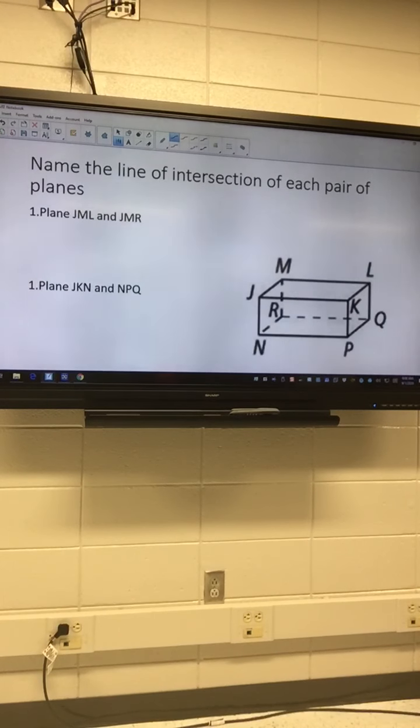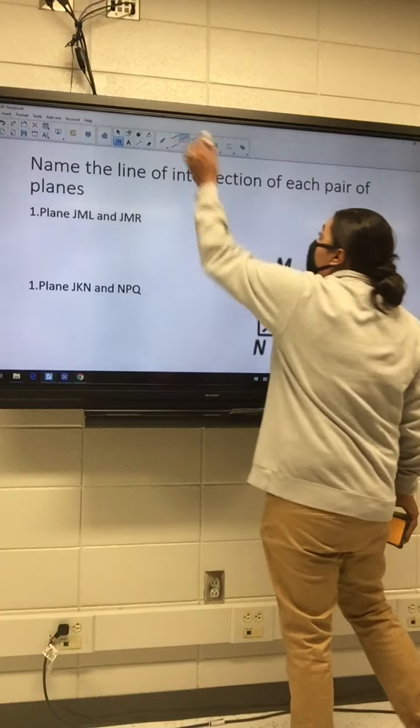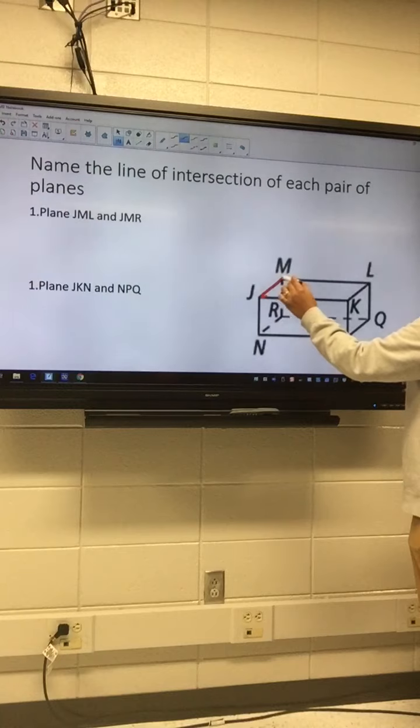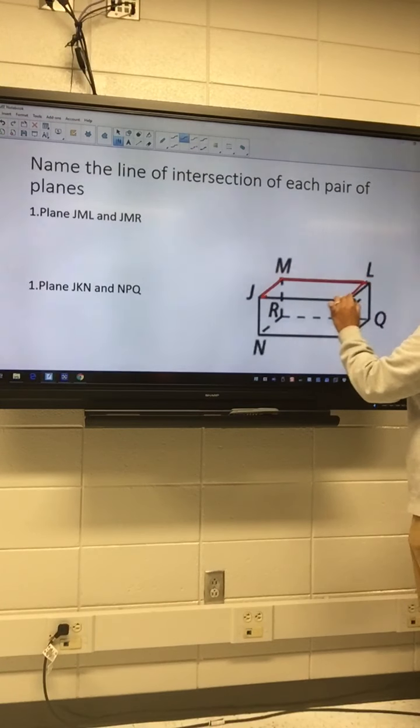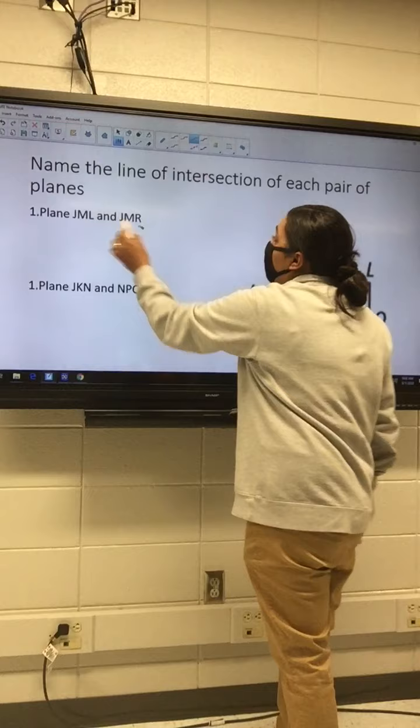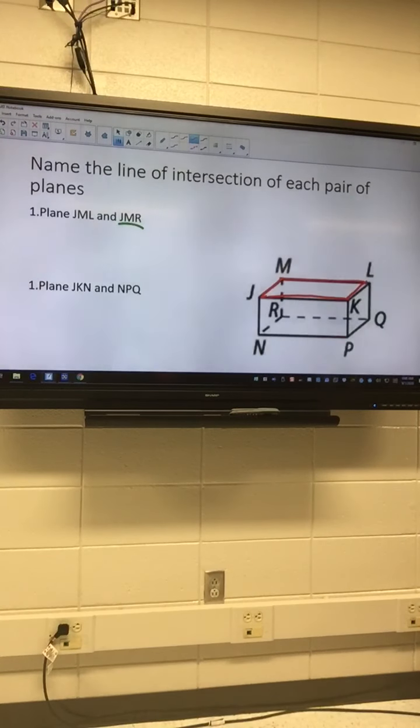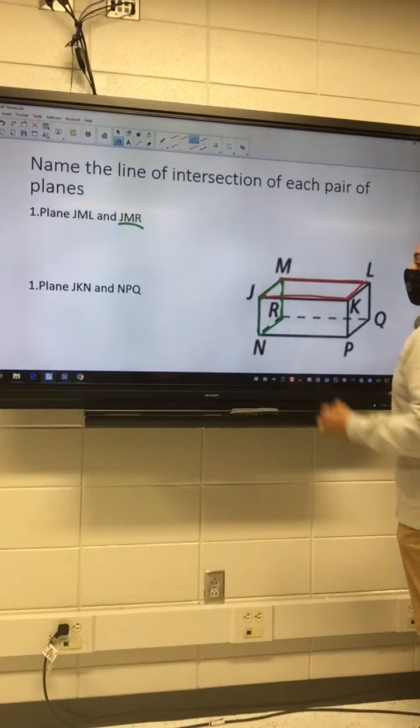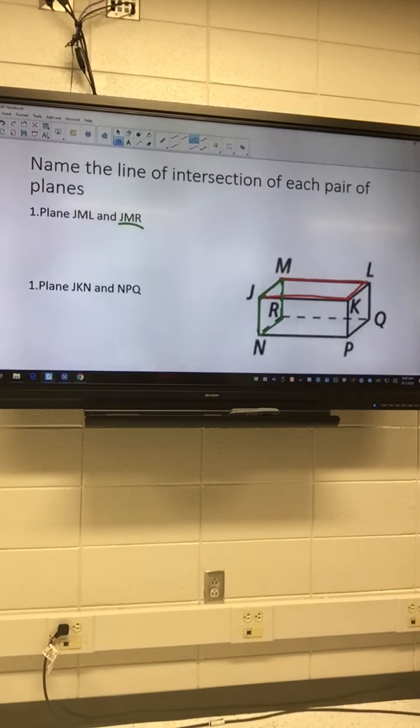JML. I want you to try to find that plane. It's the top. JML. Okay? And this is where colored pencils sometimes really help. Okay? And then we're looking for JMR. So, I've got J to M to R. Okay? Where are they touching? They only touch in one spot. Oh, JM.